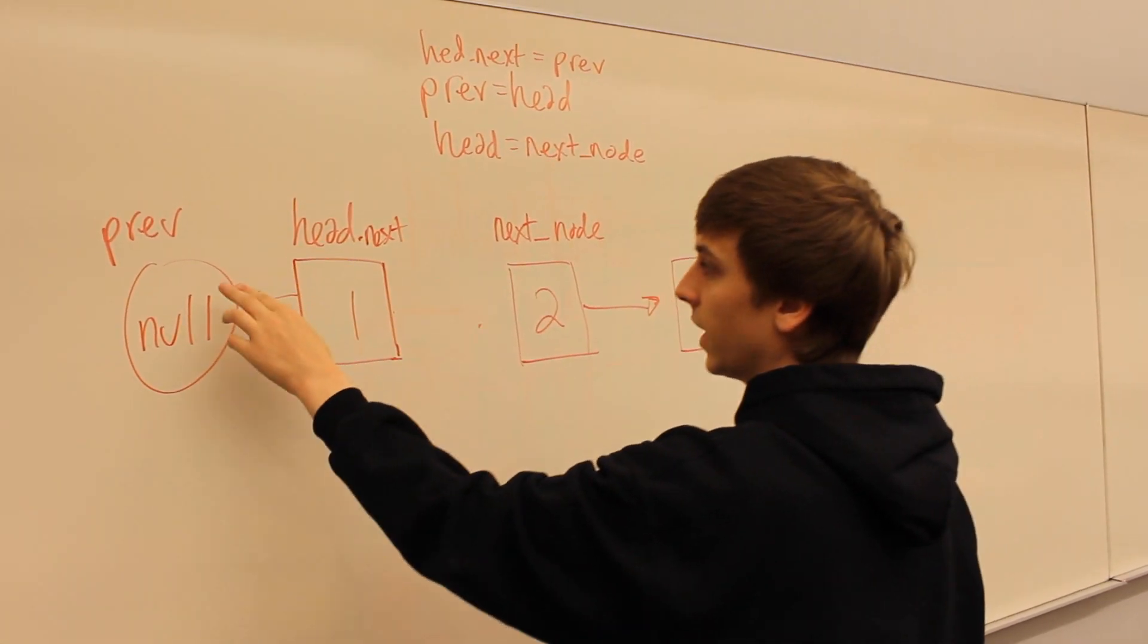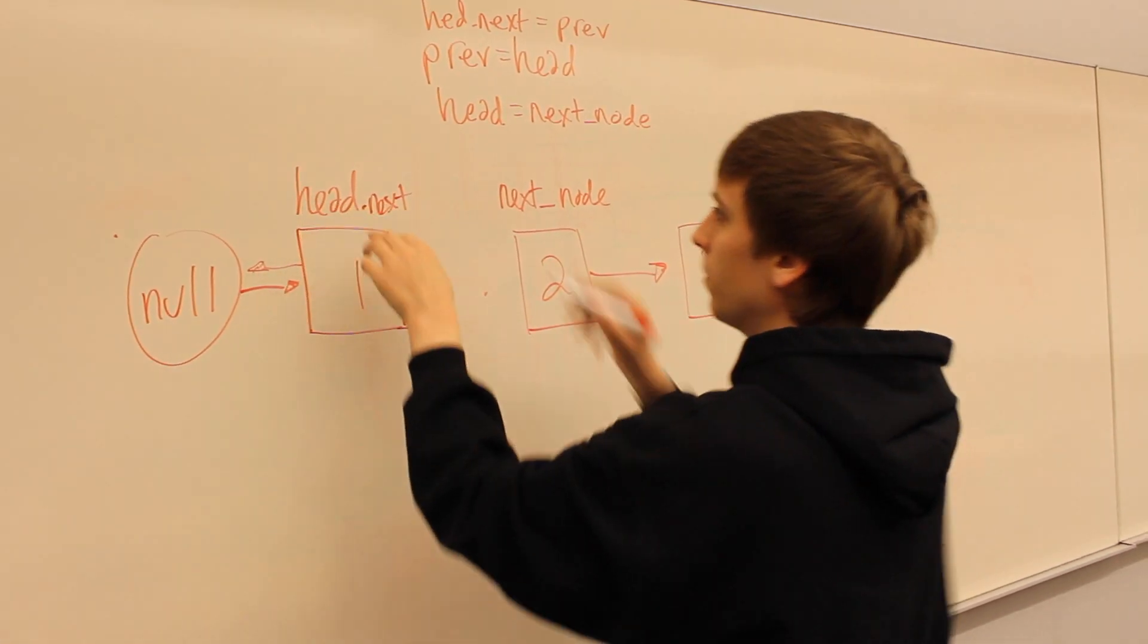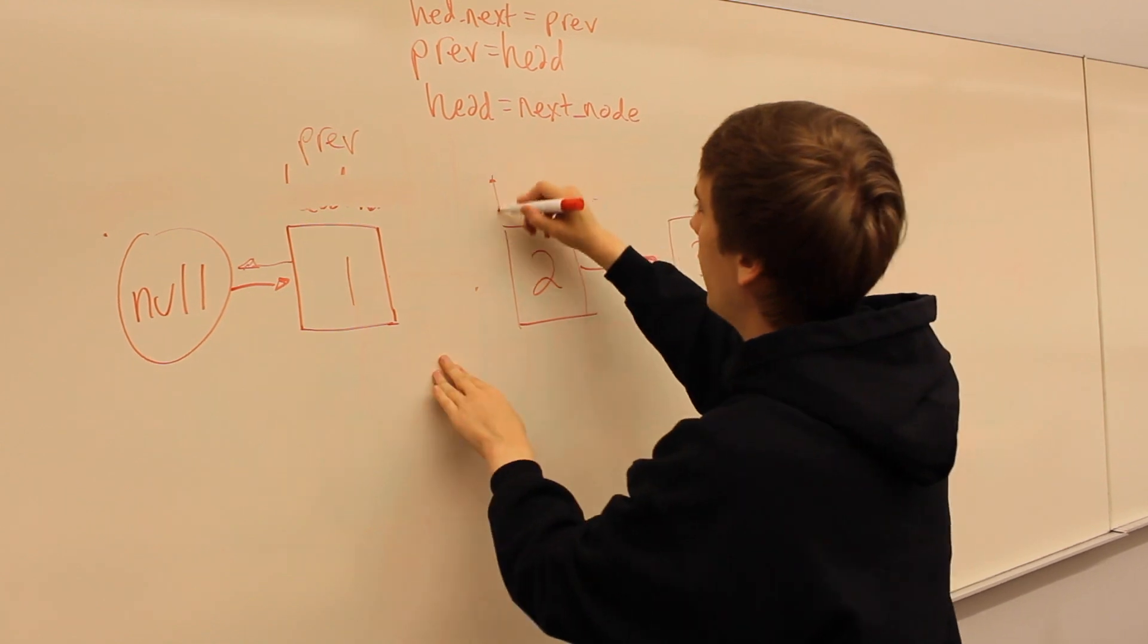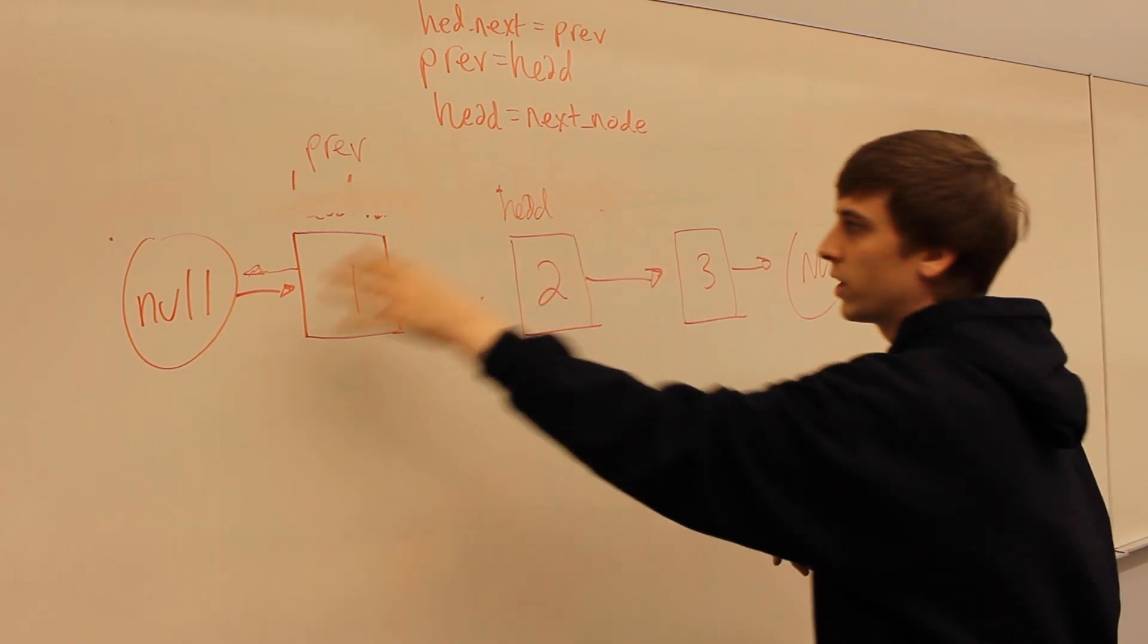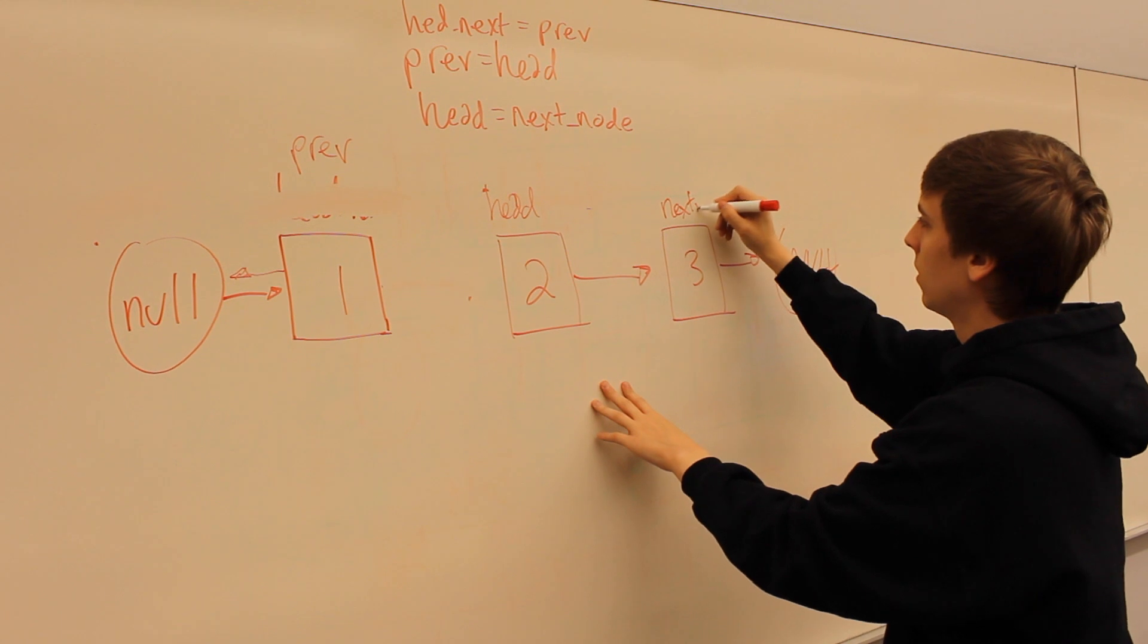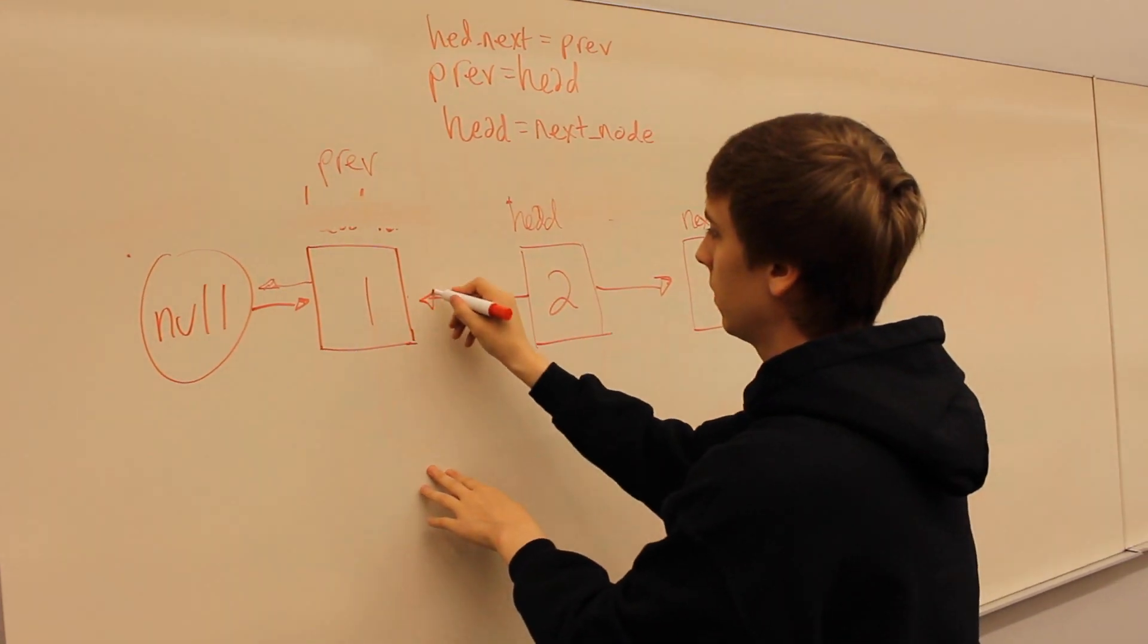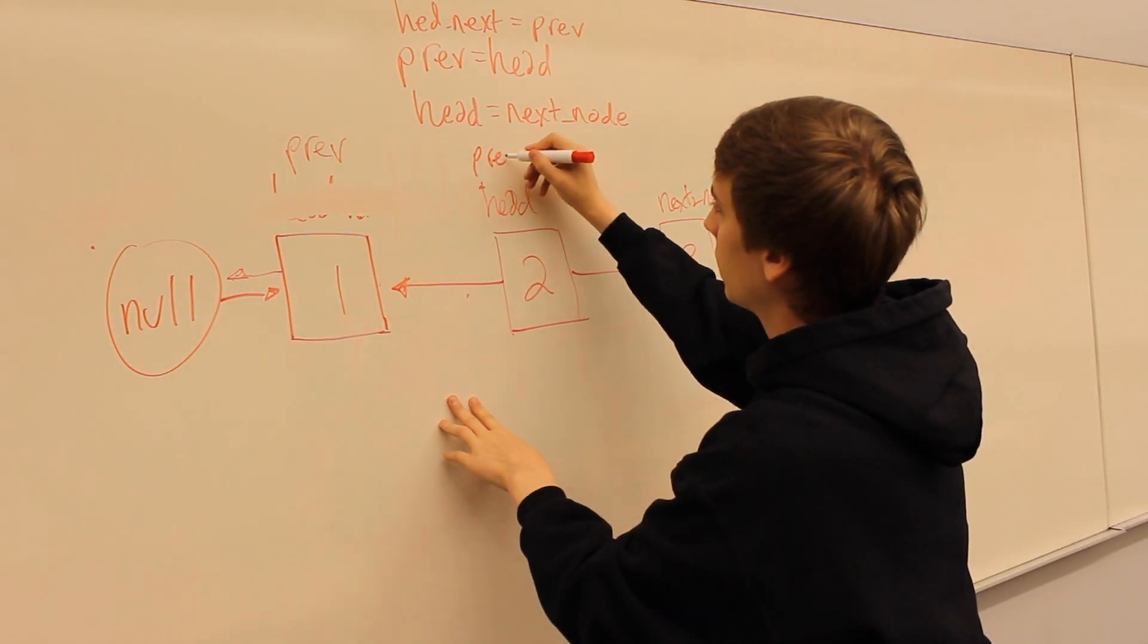And then after that we're saying, now prev is going to be head. So prev is now head and then we're saying head is now next node. So head is now this node. So you keep repeating that process and this would be next node now. And then you're saying head.next is equal to prev. And once head.next is equal to prev, prev is equal to head, repeats the same process.